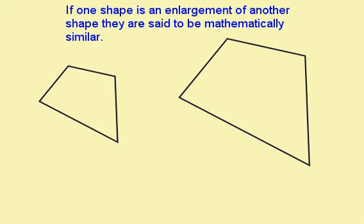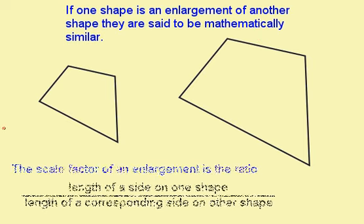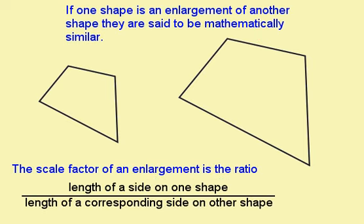We can say that two shapes are similar if one is a direct enlargement of the other. If I'm told that these two shapes are similar, I can find the scale factor of the enlargement if I'm given the lengths of two corresponding sides.